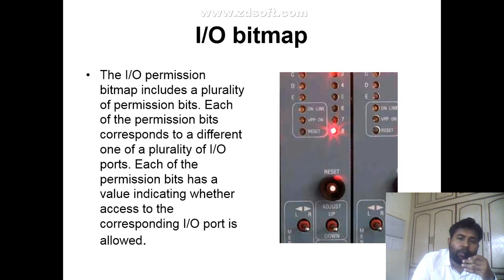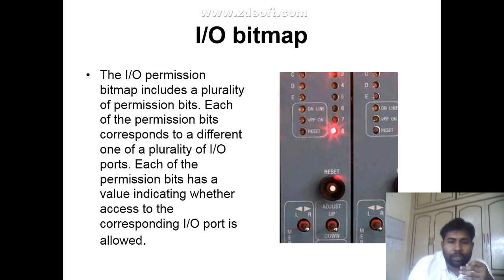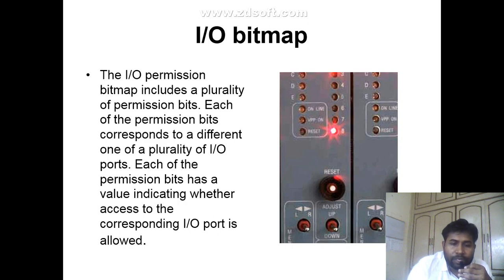Next is the input-output bitmap. The input-output permissions bitmap includes the polarity of permission bits. Each permission bit corresponds to a different input-output port, and each permission bit has a value indicating whether access to the corresponding input-output port is allowed.